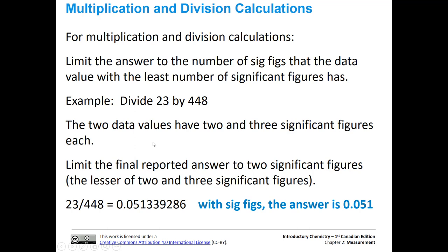For multiplication and division calculations, it's very similar, but instead of worrying about the number of decimal places, we limit the answer to the least number of sig figs that all the numbers in the problem have. For instance, if we divide 23 by 448: 23 has two significant figures, 448 has three, so we limit our final answer to two significant figures. Doing the division gives 0.051339286. The leading zeros are not significant, so counting from 1: two significant figures gives us 0.051, and the next digit is 3, so we round down. Our final answer is 0.051.